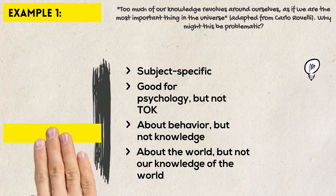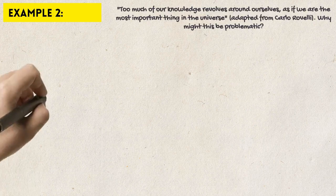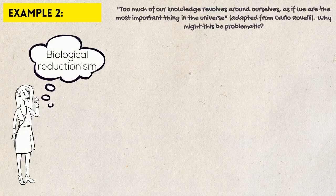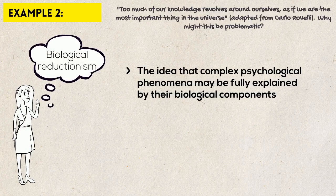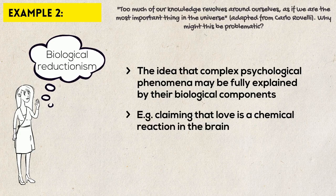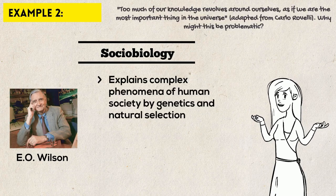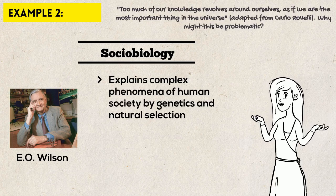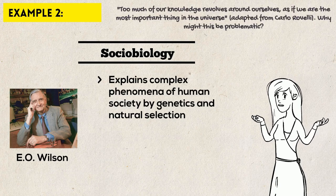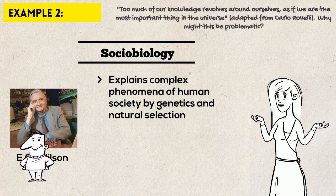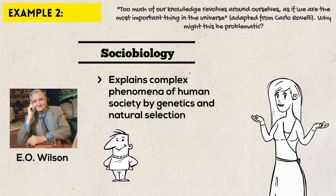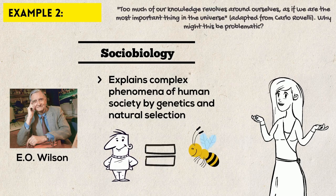Tatiana chose the same title. She also chose to write about psychology, but she chose a different approach with a focus on biological reductionism. Biological reductionism is the idea that complex psychological phenomena may be fully explained by their biological components. For example, claiming that love is a chemical reaction in the brain is biological reductionism. Another example is the controversial field of sociobiology, popularized by Edward Wilson in 1975. Sociobiology strives to explain complex phenomena of human society — such as marriage, crime, and government — by genetic inheritance and natural selection. Just like some animals, such as termites or bees, have elements of society, so do humans, and the claim is that human society is a phenomenon similar to other animal societies, only more advanced.